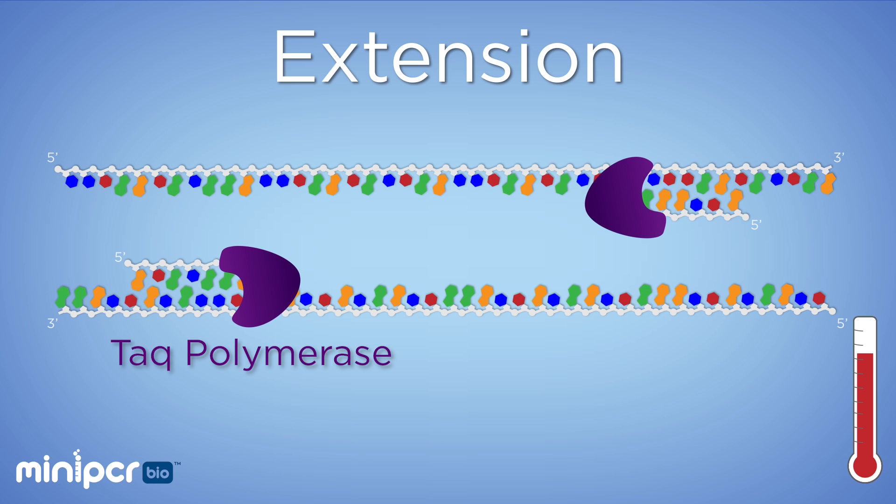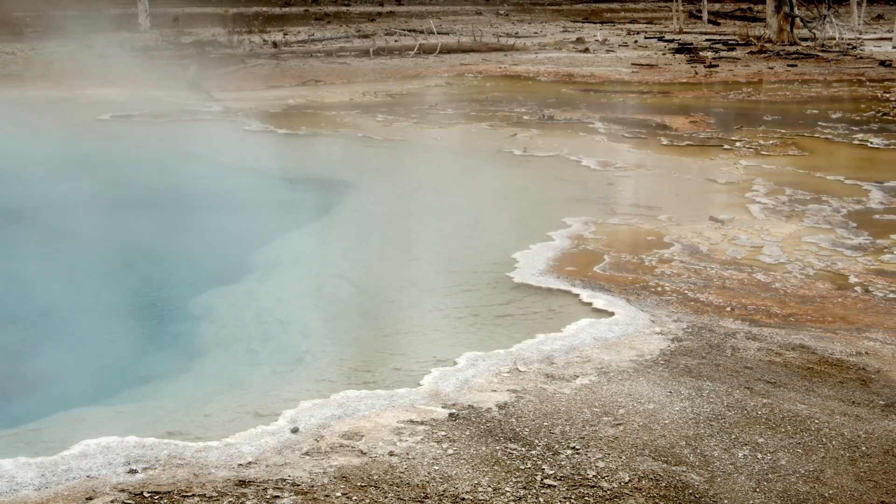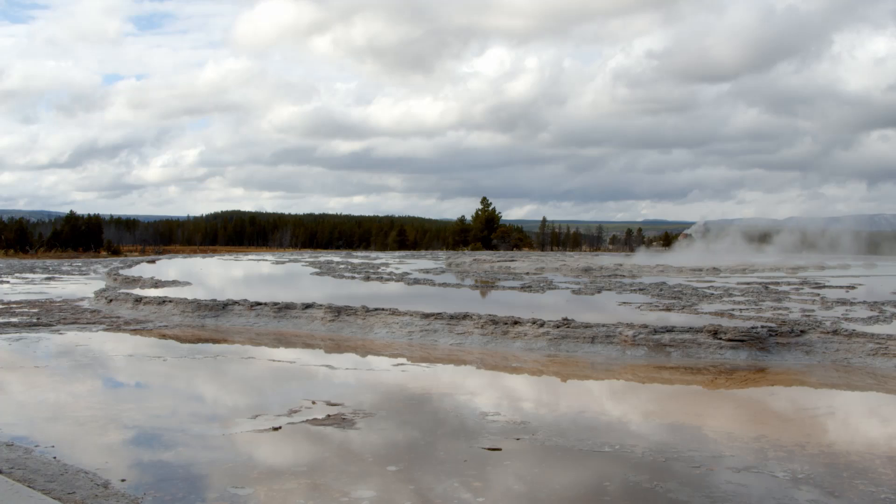So instead, we use a special polymerase called TAQ polymerase. This enzyme was originally found in thermophilic bacteria living in the hot springs of Yellowstone National Park, and remains stable in our reaction even through multiple rounds of heating and cooling.